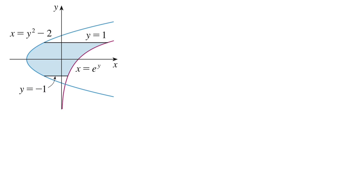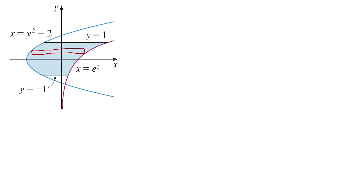Now we find the area between two curves. The first is a sideway parabola: x equals y squared minus 2. The second is a sideway exponential: x equals e to the y — it's really just y equals ln x written differently. Since this is a sideways case, it's easier to use horizontal rectangles. The width of a horizontal rectangle is a little bit of y, denoted dy.